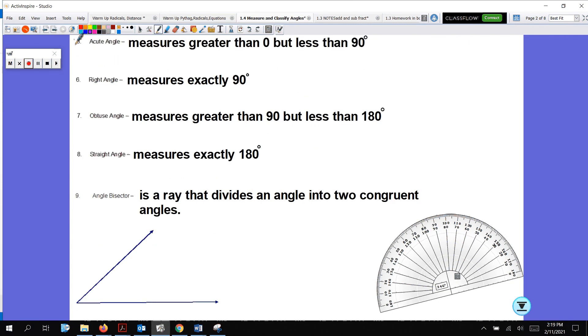Here are some more definitions. An acute angle measures greater than zero but less than 90. A right angle measures exactly 90 degrees. An obtuse angle is greater than 90 but less than 180. And a straight line or straight angle measures exactly 180 degrees.